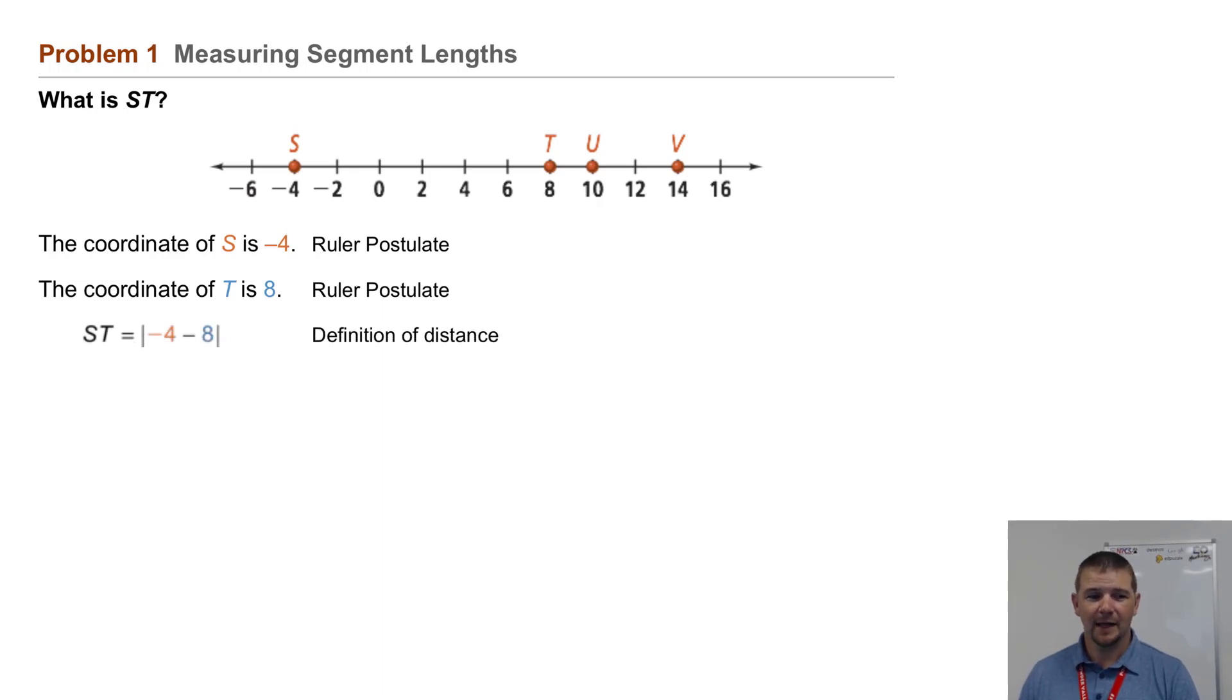ST, that length, is the absolute value of -4 minus 8. That's by the definition of distance we saw previously.